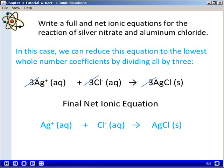Since we notice that we can reduce the coefficients to the lowest whole numbers by dividing all by three, we end up with a final net ionic equation with coefficients of one in front of everything. So one silver ion plus one chloride ion in aqueous solution yields one AgCl as a solid.